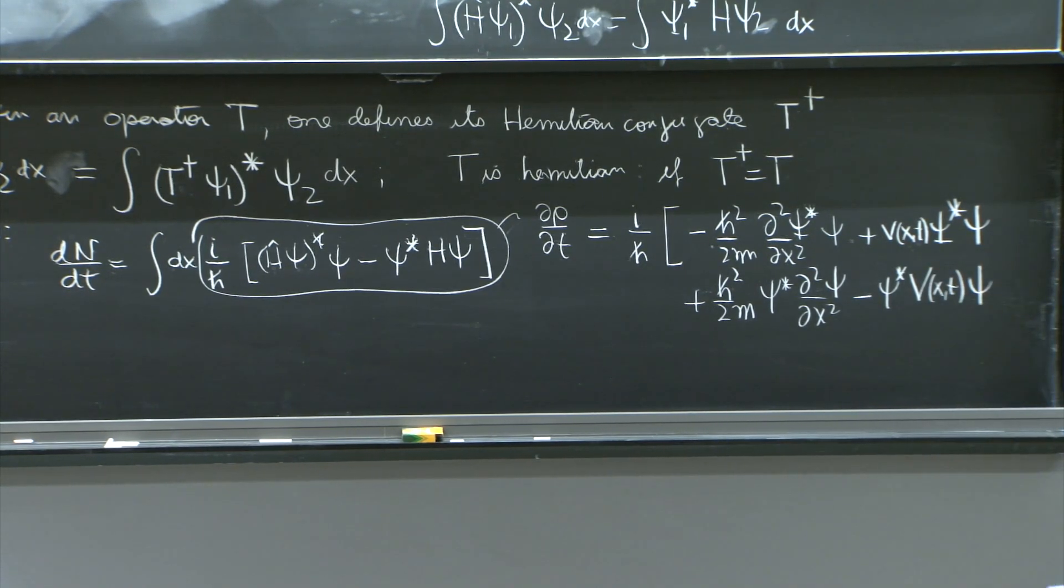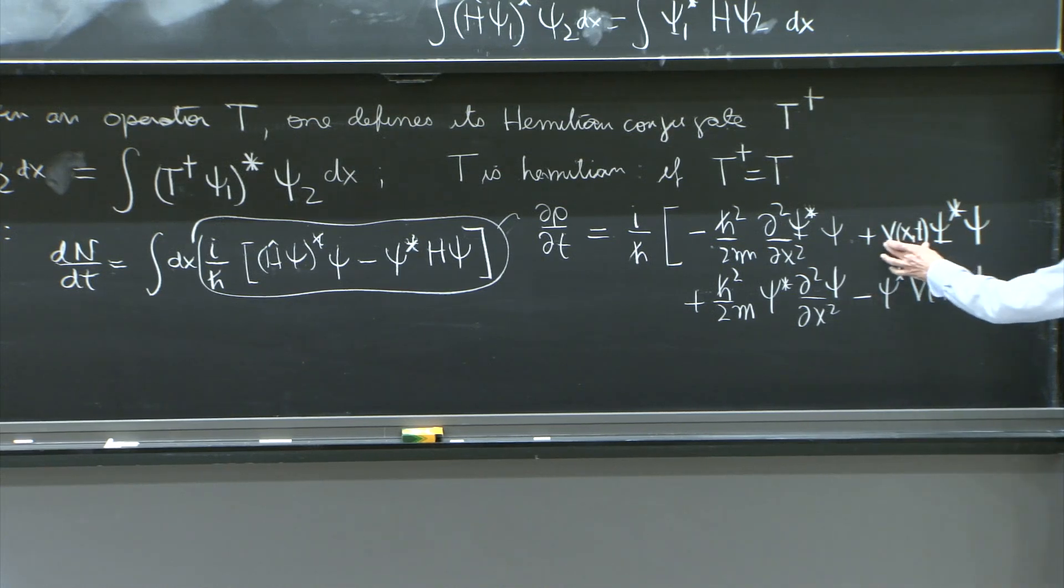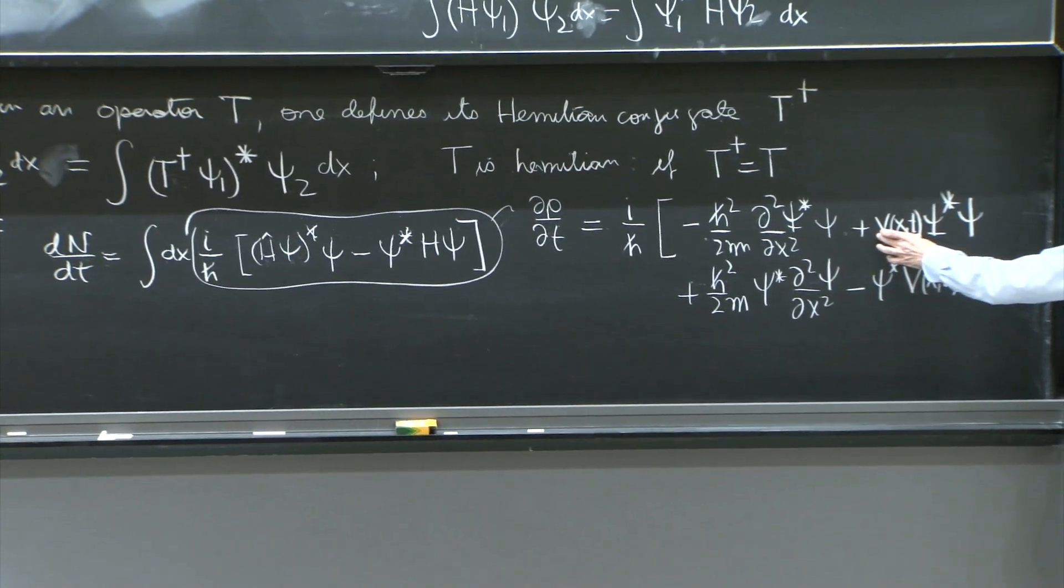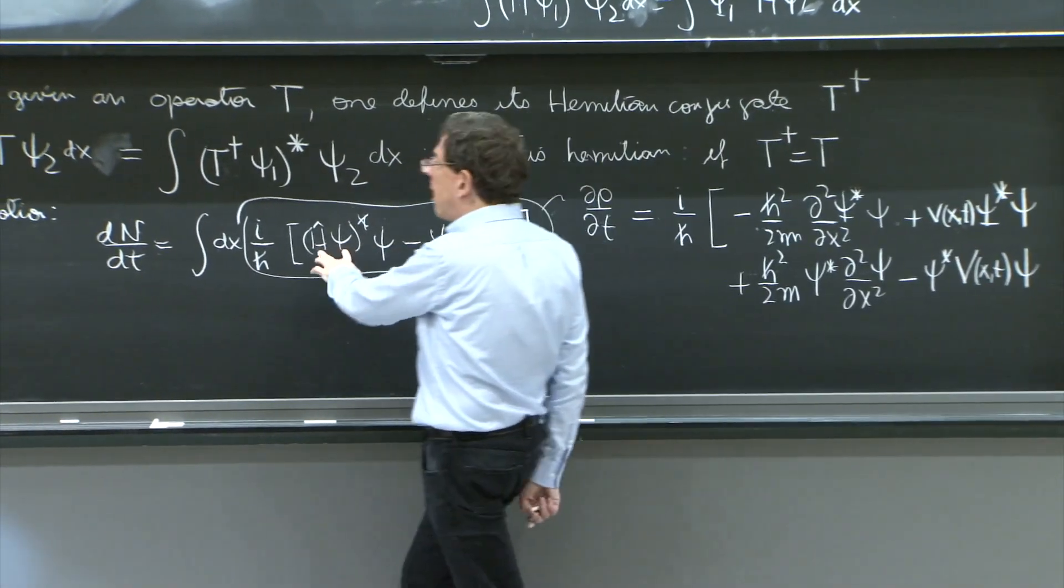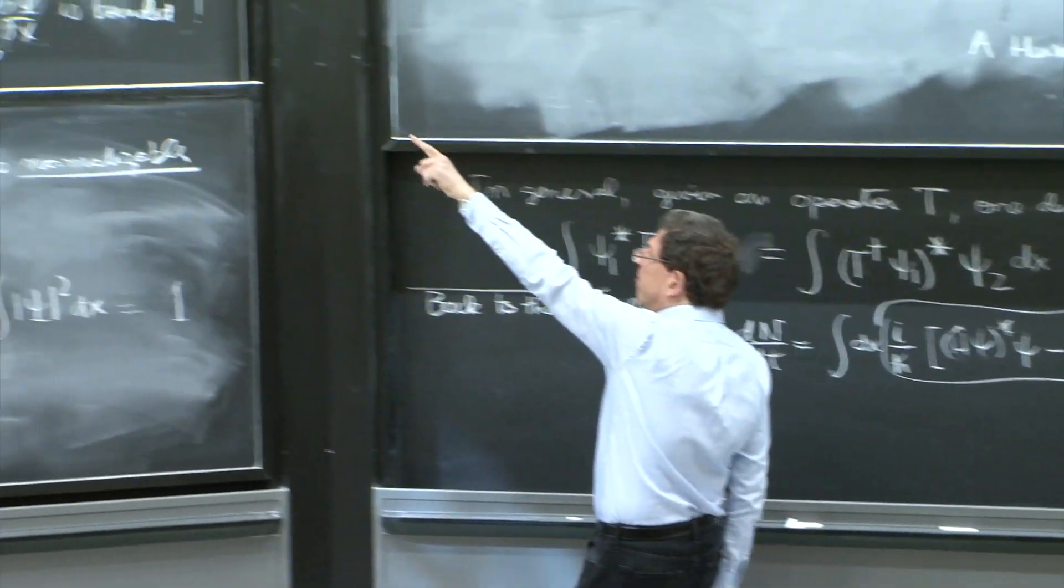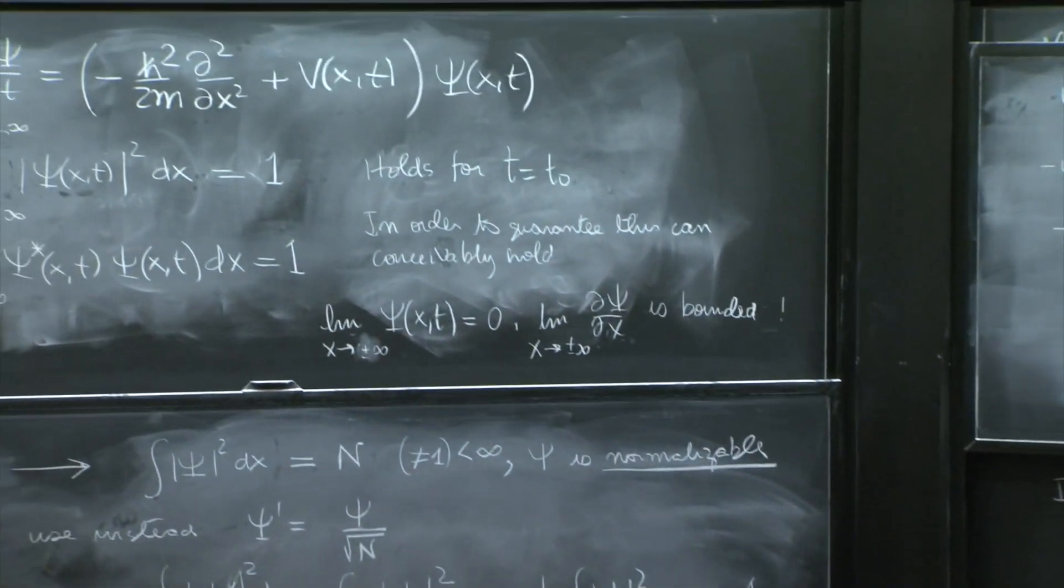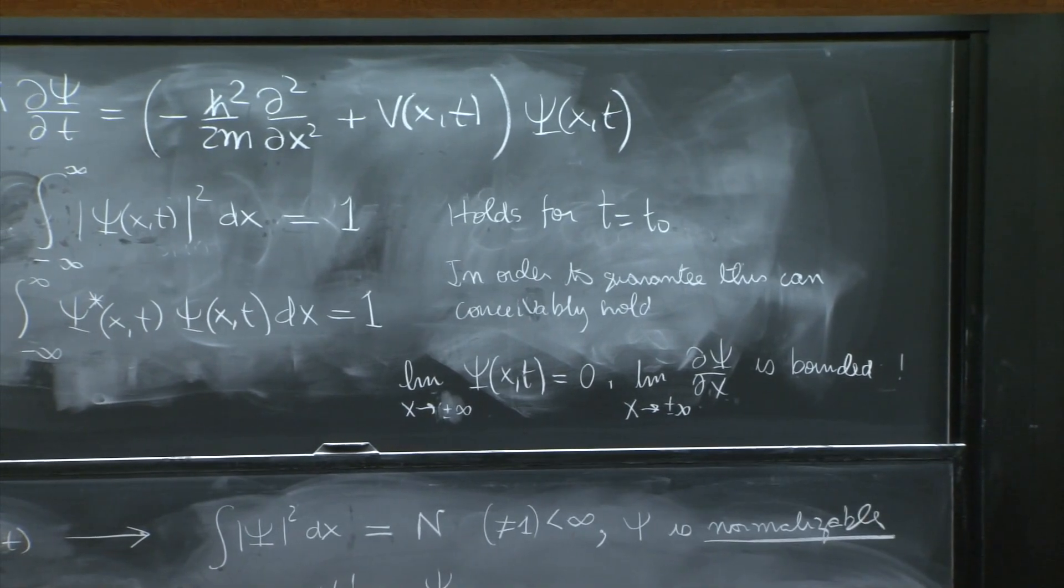Here, there was a little thing that probably I should have said before, is that the potential is real. That's why it didn't get complex conjugated here. H psi would have a term V psi. And we just conjugated the psi.